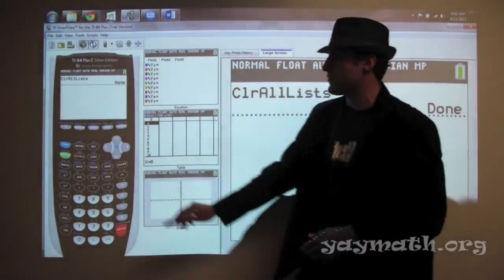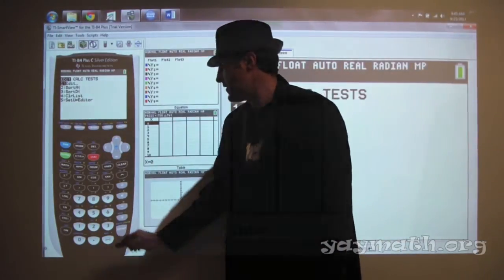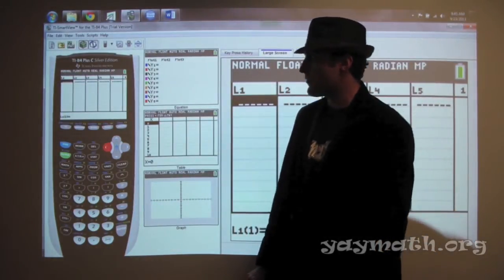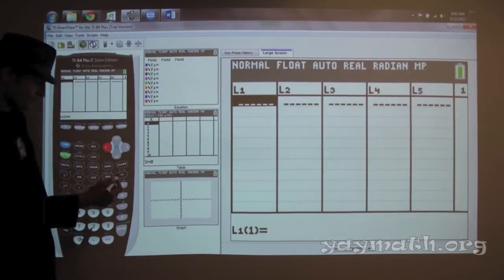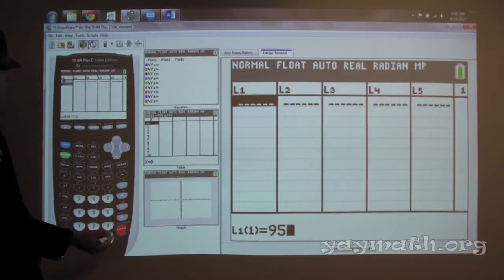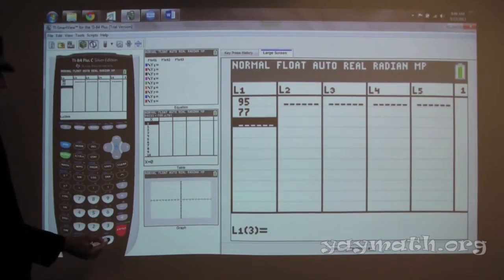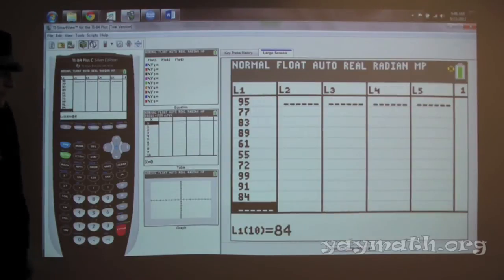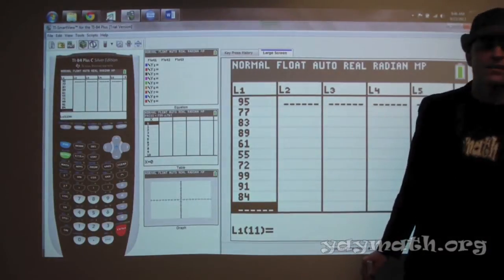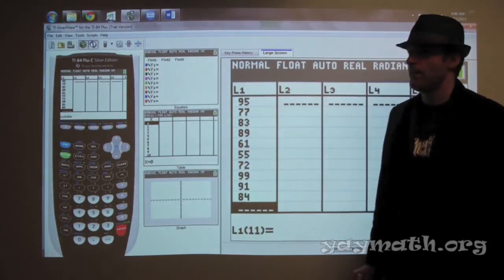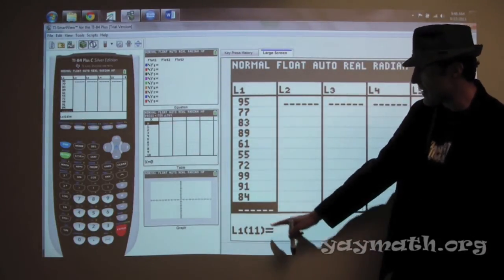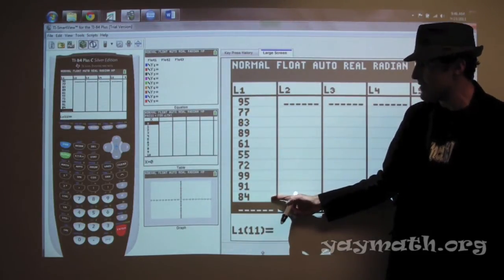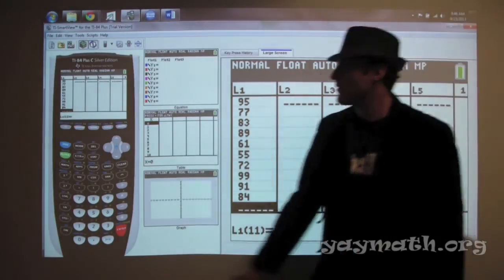Now we're ready to go back into our list in case it was full. Stat and enter. So there we are. And now we have to enter in data. So can someone read it to us? What were they again? 95, 77, 83, 84. What do you think L1 stands for? List. Right, so list of numbers. L1, L2. And we can see that we have 10 numbers in here. This is L1 spot 11, so clearly this would have to be 10.